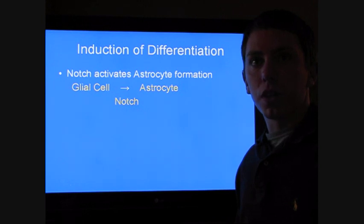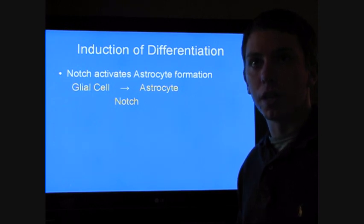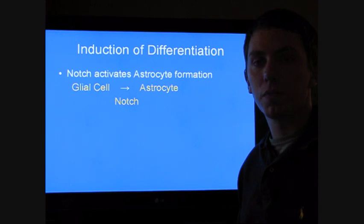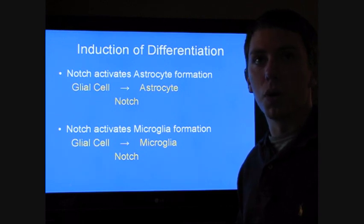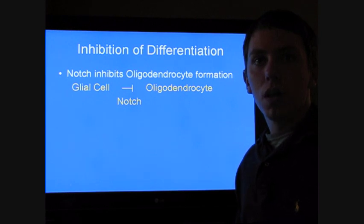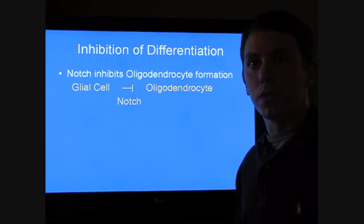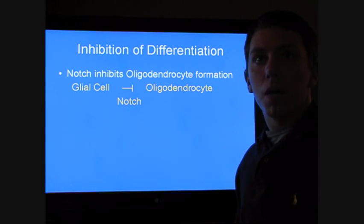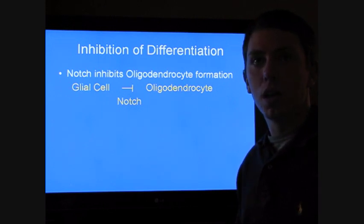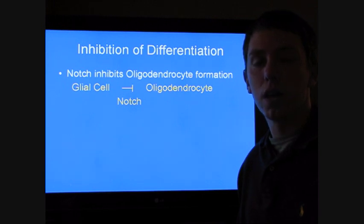The authors suggest specifically that events resulting from Notch signaling modulate glial cell differentiation to an astrocyte lineage — Notch signaling induces changes in specific gene expression responsible for astrocyte formation. Similarly, microglial cell formation is also proposed to be mediated by Notch signaling. In addition to Notch's ability to induce differentiation of some glial lineages such as microglial cells and astrocytes, the authors also suggest Notch signaling has the potential to inactivate events leading to differentiation of other glial fates. In particular, Notch was discussed to prevent glial cells from specializing into oligodendrocytes.